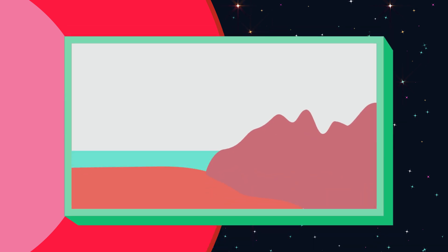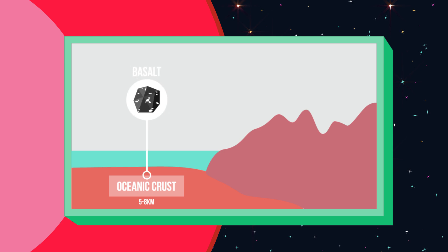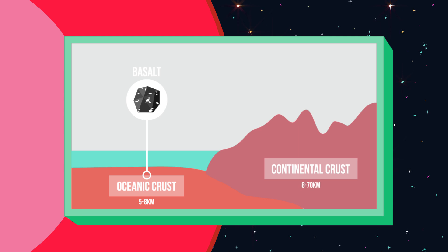There are two parts to the crust. One being the oceanic crust, which the ocean sits on and is around 5 to 8 kilometers deep. It is mainly made of basalt, which is a type of igneous or volcanic rock.